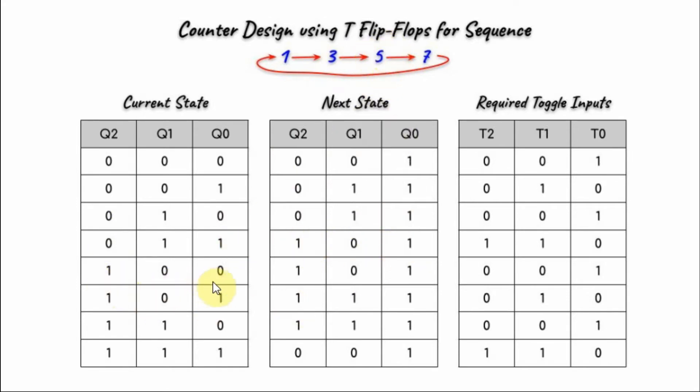When we have 4, it should stay 5. When we have 5, the next state is 7. When we have 6, it should stay 7. When we have 7, the next state should be 1. This gives us the truth table for the next state.